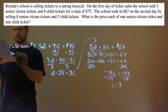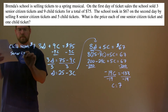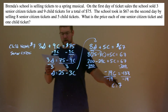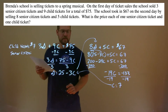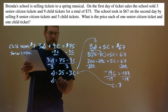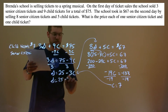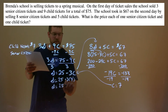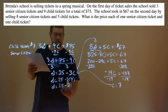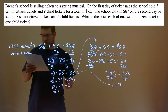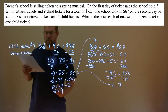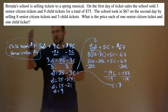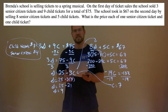What about the senior citizen ticket? We're going to take that value of 7 for C and plug it in. S equals 25 minus 3 times 7. 3 times 7 is 21, and 25 minus 21 is 4. So the price of a senior citizen ticket is $4, and now we have the price of both child and senior citizen tickets.